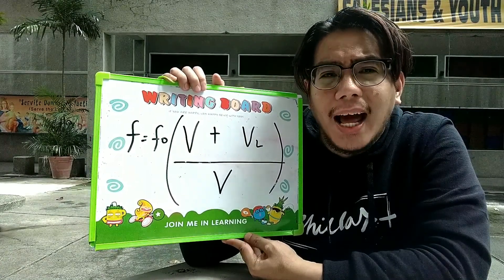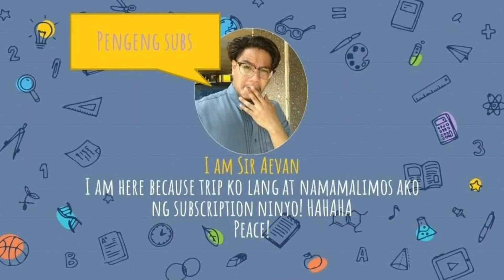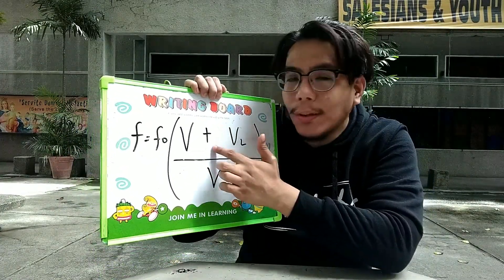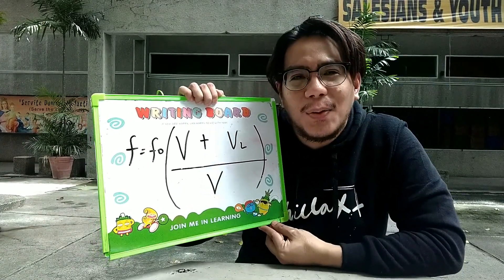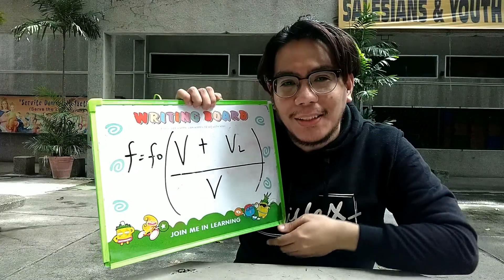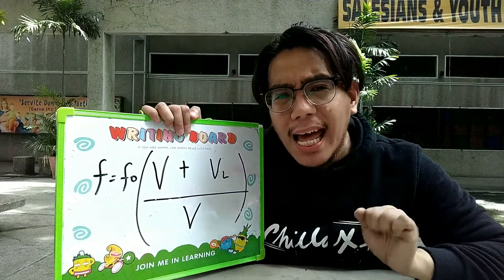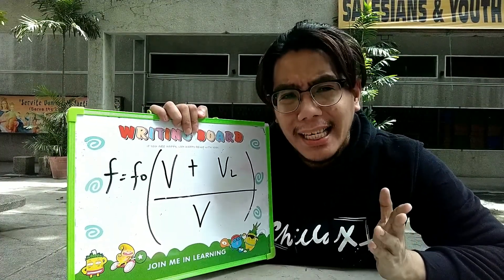Bibigyan ko ulit kayo ng sampung segundo para alamin kung anong ibig sabihin ng formula na ito. Naniniwala ako guys na alam ninyo na talaga yung concept na ito. Ang sagot: the listener is going towards and the source is at rest. Guys, ang ibig sabihin lang naman ito, pag wala yung listener or yung source, ibig sabihin nito ay at rest sila, hindi sila gumagalaw.